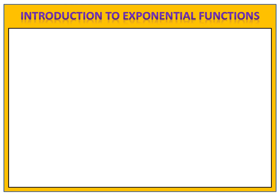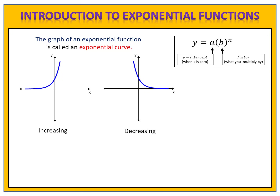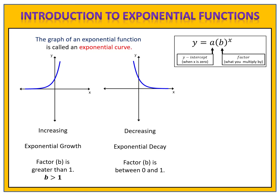Let's talk a little more about exponential growth and exponential decay, and let's take a look at the graph of an exponential function. The graph of an exponential function is called an exponential curve. The graph would look like this if the function is increasing, and like this if the function is decreasing. When an exponential function increases, we have exponential growth; when it decreases, we have exponential decay. This behavior is predictable because it comes down to the b-value or the factor. If the b-value is greater than 1, you have exponential growth. If the b-value is between 0 and 1, you have exponential decay. The factor will never be negative, nor will it ever be exactly 0 or 1.